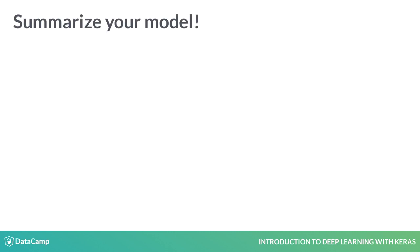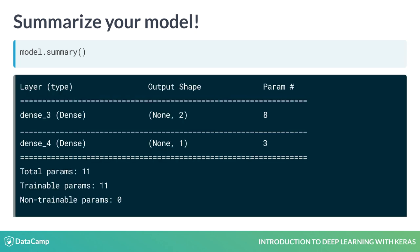Once we have created our model, we can call the summary method on it. This displays a table with three columns: the first with the layer's name and type, the second with the shape of the outputs produced by each layer, and the third containing the number of parameters. Those are the weights, including the bias weight of each neuron in the layer.